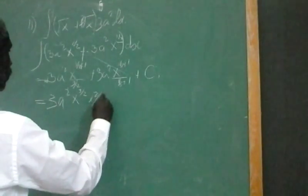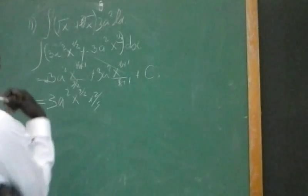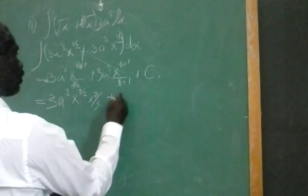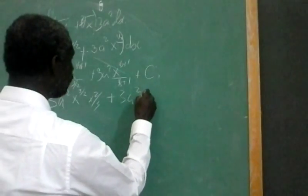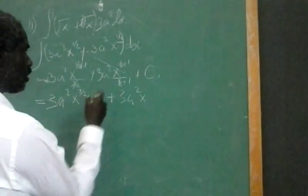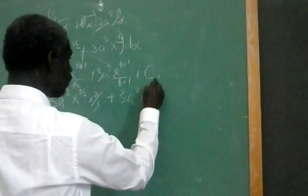multiplied by two-thirds, plus two A squared X, this is one and one-third, which is four-thirds.